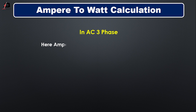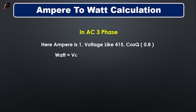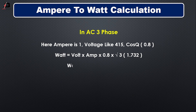In 3-phase AC line, here ampere is 1, voltage is 415, and we also need a power factor and root 3. The formula is voltage multiplied by ampere multiplied by 0.8 (power factor) multiplied by root 3. If we calculate all the values, the result is 575 watts.